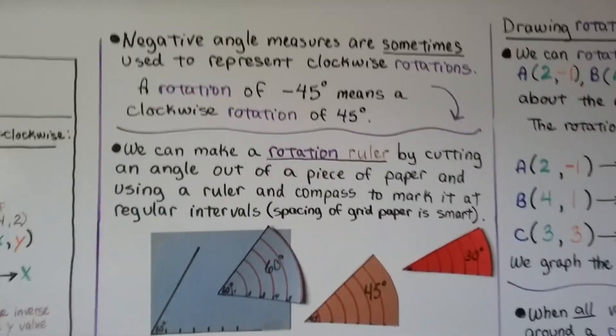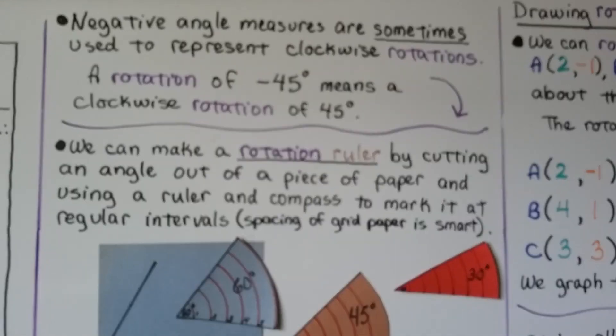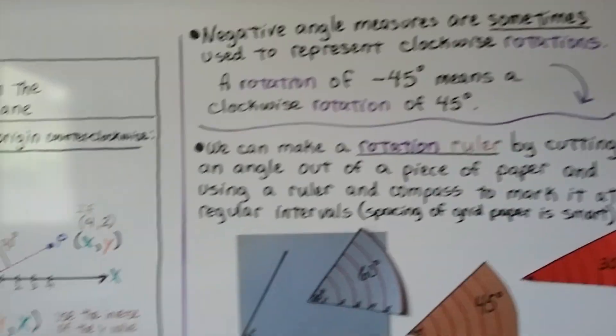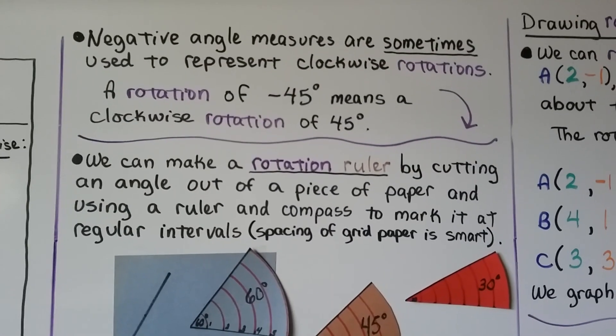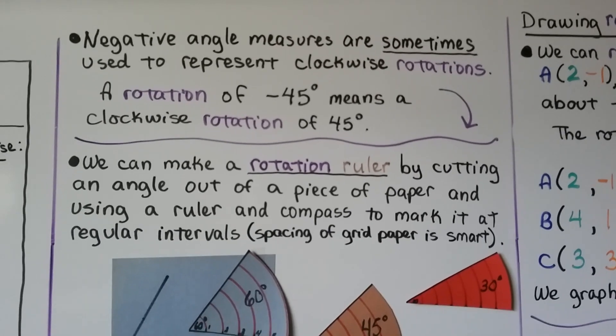Negative angle measures are sometimes used to represent clockwise rotations. So we've been talking about counterclockwise rotations. A rotation of negative 45 degrees means a clockwise rotation of 45 degrees.